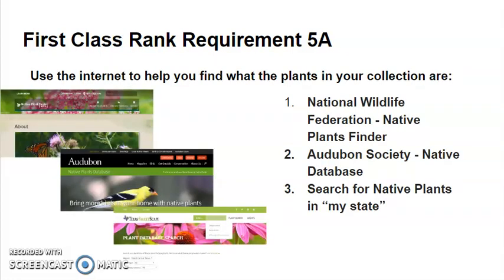If you don't have a smartphone, you can also use the internet to help you identify the plants in your collection. Some helpful websites are the National Wildlife Federation's Native Plant Finder, the Audubon Society's Native Plant Database, or you can search for native plants in your state. I live in Texas, so I found a Texas State Plant Database.